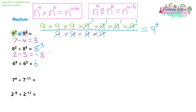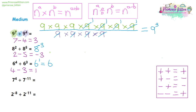Next one: we have six to the four divided by six to the three, which gives us four minus three, which gives us one. So it gives us six to the power of one, which we can simply say is six.